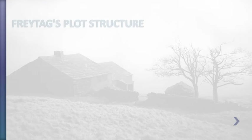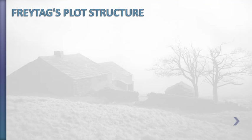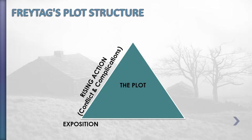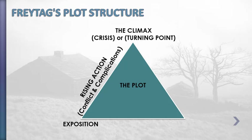Freytag divided plots into five main divisions, and he called them plot structure. The first division is called Exposition, or the beginning. The second is called Rising Action, including Conflict and Complications. The third is called the Climax, Crisis, or Turning Point. The fourth is called the Falling Action, and the fifth is called the End, or Denouement.